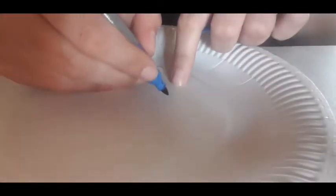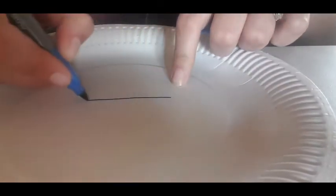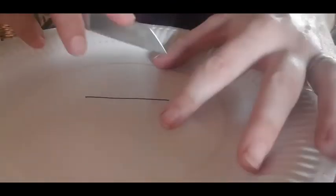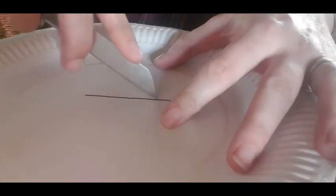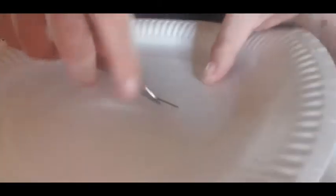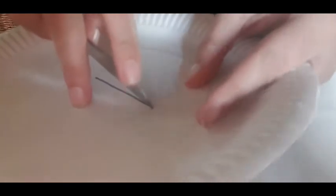For the next part, we need our paper plate. We are going to cut a slit in the paper plate to give our rocket a place to move. I'm going to draw a line for where I want to cut the slit. I can use a knife, scissors, or a carpet cutter to make the slit. Make sure your paper rocket can fit through the slit like so.